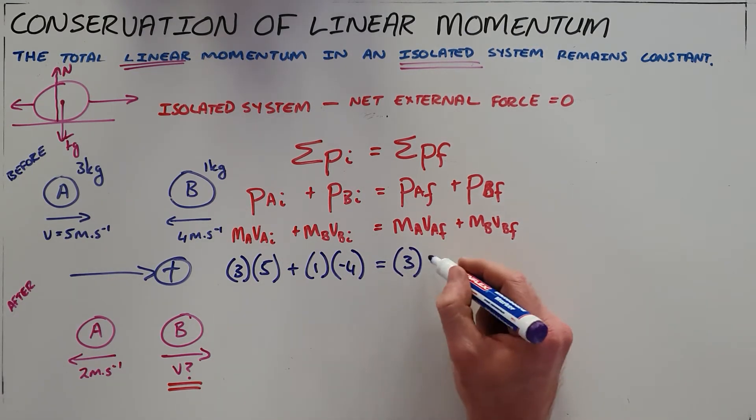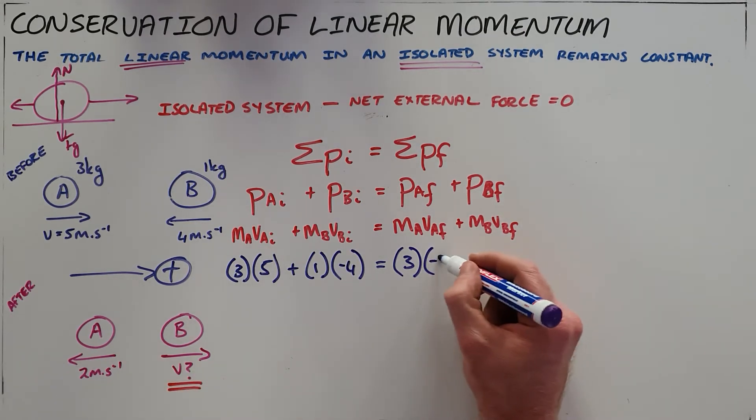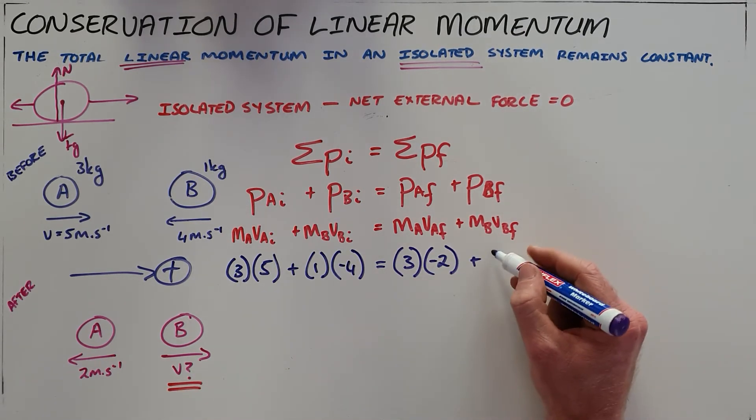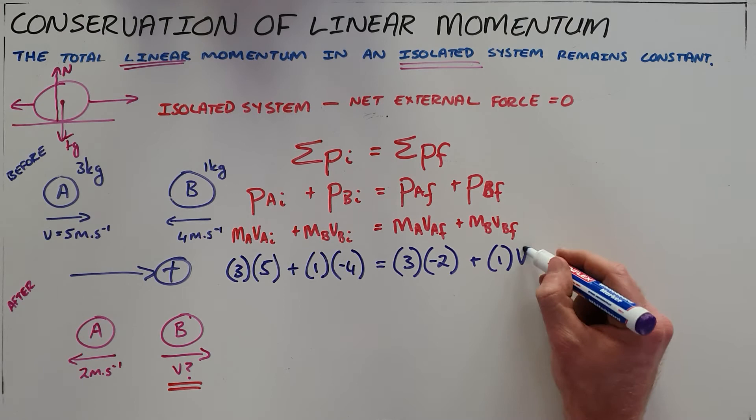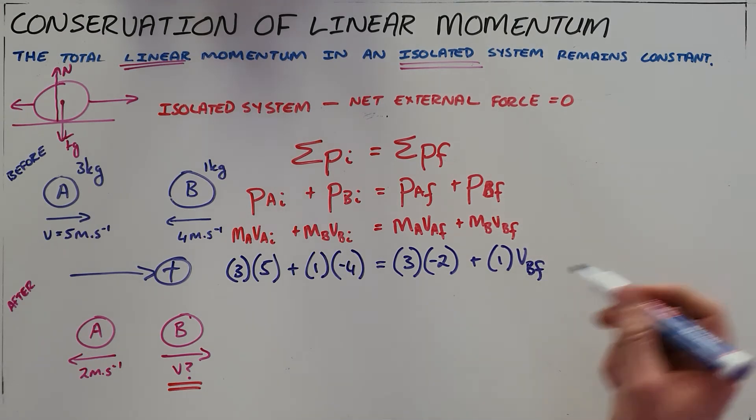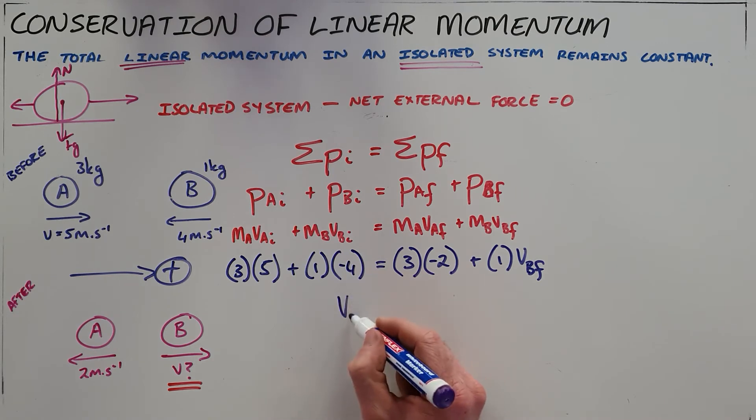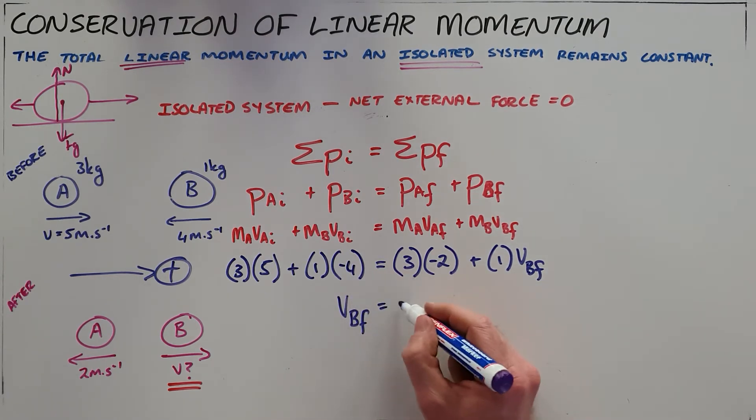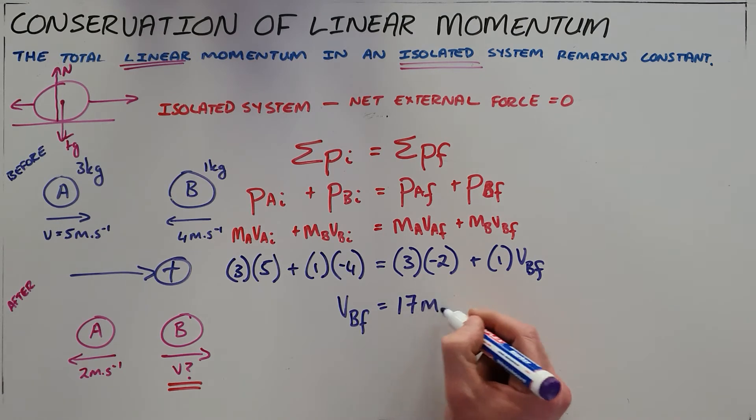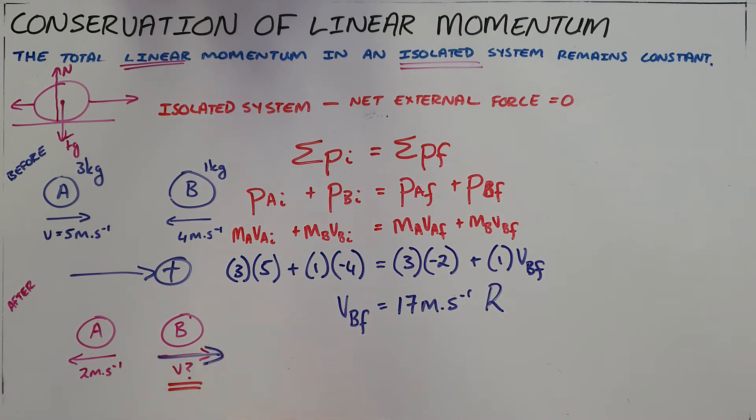Final mass of A remains unchanged. Final velocity of A is now in the opposite direction. Mass of B remains unchanged and the final velocity of B is the unknown that we are trying to solve for. We can solve this to find that the final velocity of B is 17 meters per second, which obviously means it's 17 meters per second to the right. That is this velocity here.